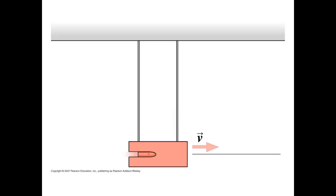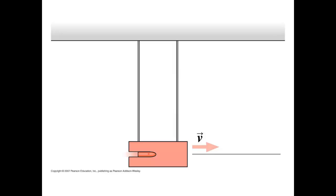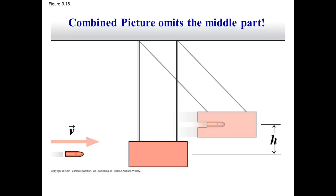Then, from that point, the block swings up and stops, reaching some maximum height h. So there's a second part to the problem where this block swings up like that. That's what's being shown in the combined picture, which sort of omits the middle part. That's where our lab manual is a little bit better in that it shows the middle part, but it's still sort of combined with the last part, so you don't see the full time sequence.